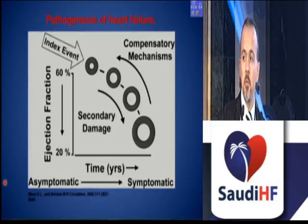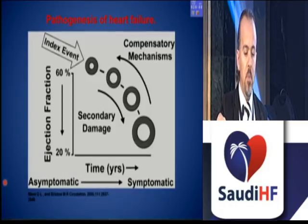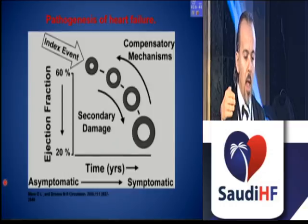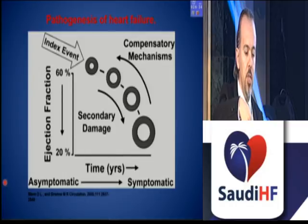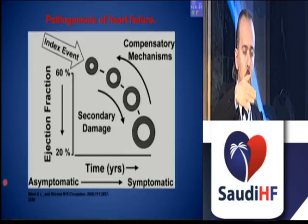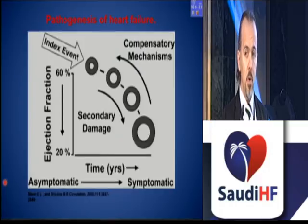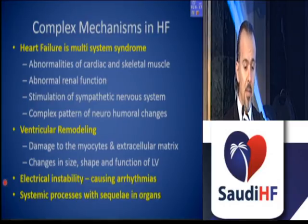When we look at the pathogenesis of heart failure, we always see an inciting index event, which leads to a downward spiral accompanied by secondary damage, mainly driven by acute heart failure decompensations. At the end, we see a downward-going ejection fraction transitioning from an asymptomatic phase to a heavily symptomatic phase. During this course — which takes years in a usual patient — there are compensatory mechanisms trying to overcome the damaging processes. It is a complex, multi-system syndrome involving abnormalities of cardiac and skeletal muscles.